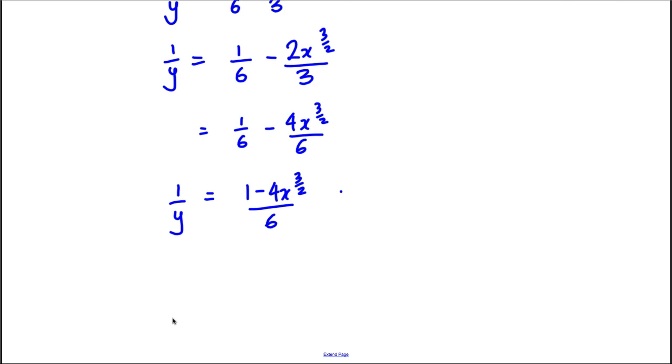And all of this is equal to 1/y. And now what we can do is we can take the reciprocal of both sides or we can flip both sides. So clearly then, y = 6/(1 - 4x^(3/2)). And we're done at that point. That is our particular solution and we're done.